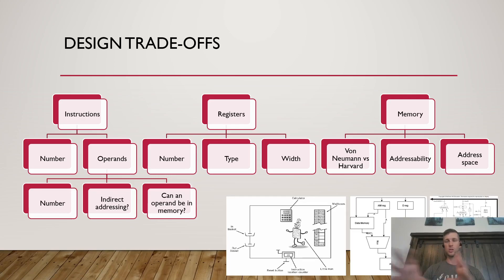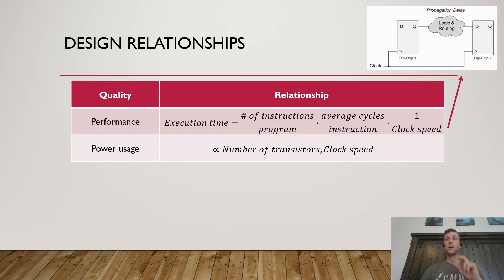Number two, I want us to understand these two relationships between performance and power usage. Performance we learned in E360 as one over the execution time. And so these factors affect a computer's performance. And additionally, like we saw a few slides ago, the power usage of a computer is proportional to how many transistors are in there, how big and how complex it is, and also how fast the clock is running on that computer. And I think in a future lesson, we'll take a little more slightly closer look at this to see that relationship. So that's number two. Just want you to understand these two relationships.